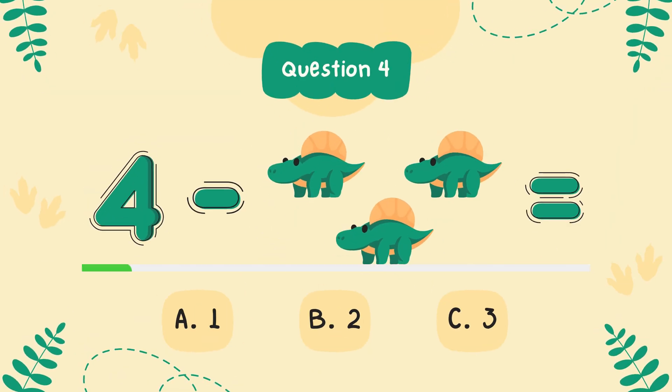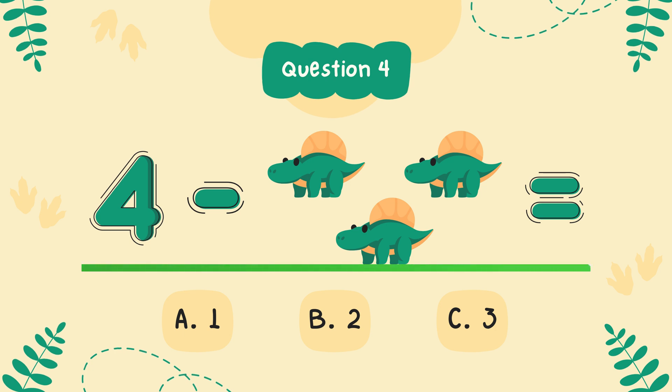What is 4 minus 3? Great. The answer is 1.